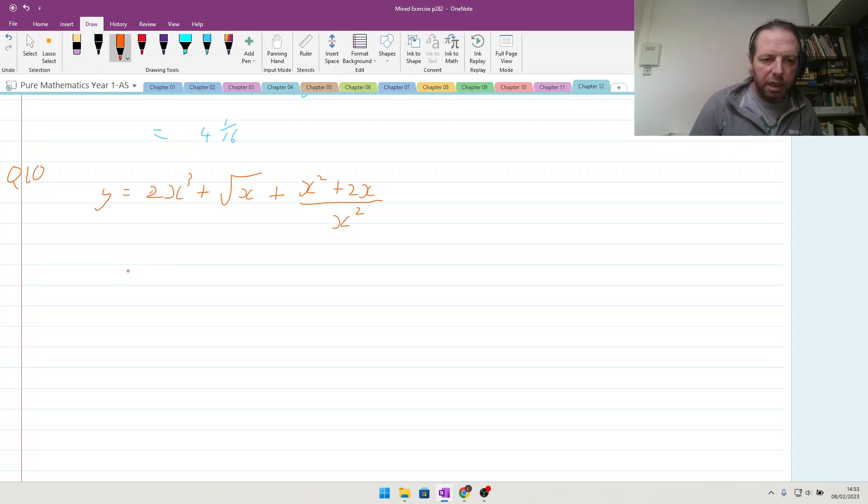2x cubed plus the square root of x plus x squared plus 2x all over x squared. Okay, so first off, let's tidy this up. 2x cubed plus x to the power of a half instead of the square root plus x squared over x squared plus 2x over x squared.